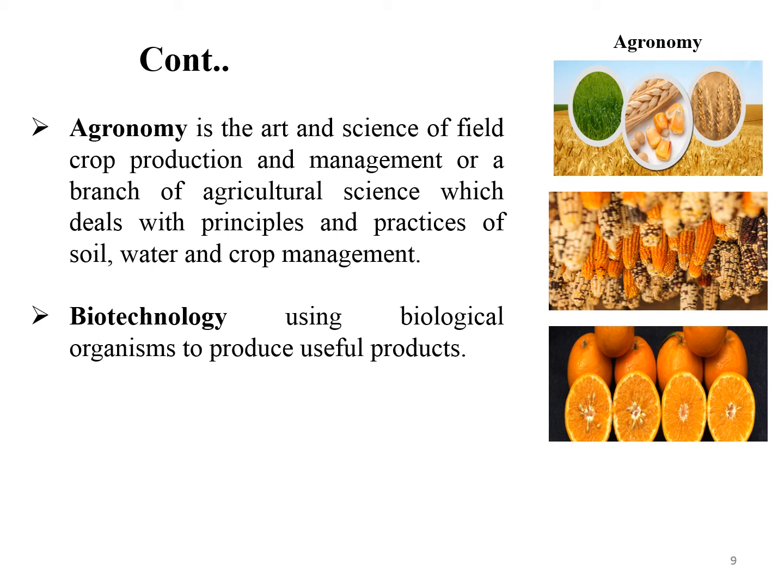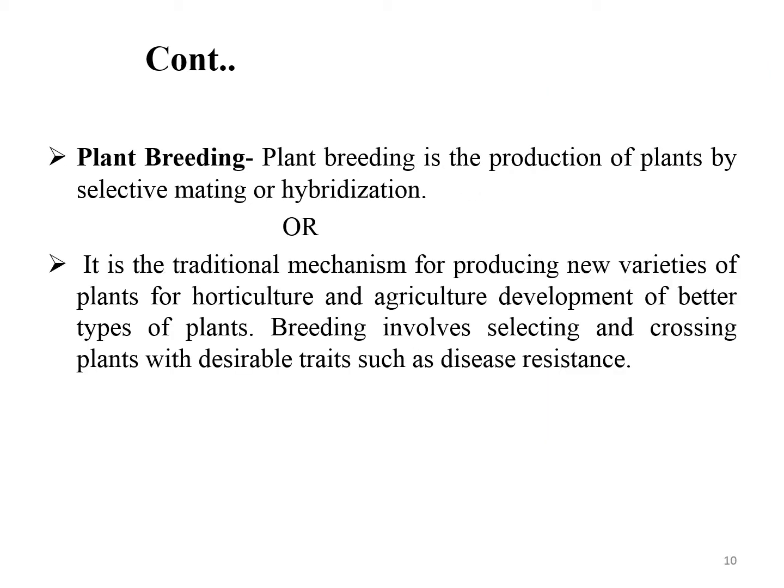Biotechnology involves using biological organisms in industrial, agricultural, and other technological applications to produce useful products. Plant breeding is the production of plants by selective mating or hybridization. Selective breeding, also called artificial selection, is the process by which humans selectively develop particular phenotypic traits by choosing which plants will reproduce together. It is the traditional mechanism for producing new varieties of plants for horticulture and agriculture. Breeding involves selecting and crossing plants with desirable traits such as disease resistance.